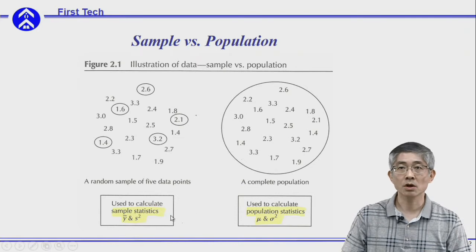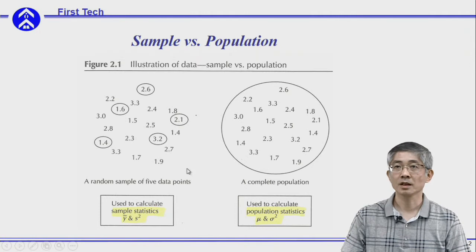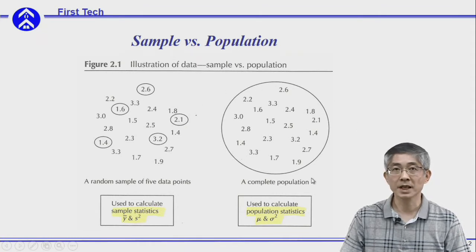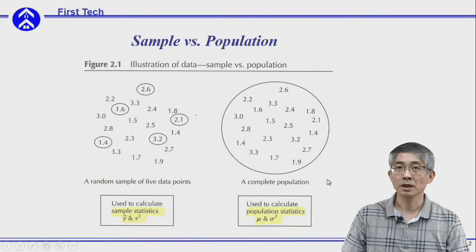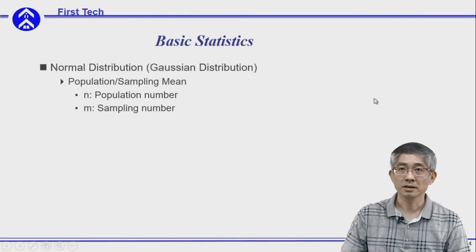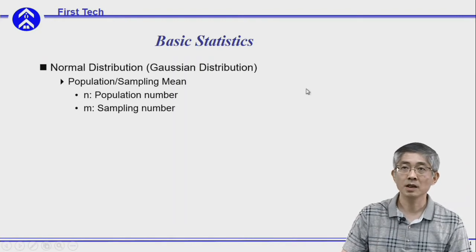This is called sample mean and sample variance. For example, we only use five samples and try to use the distribution of these five samples to predict the population behavior. Although there might be some errors, this is a very cost-efficient way.